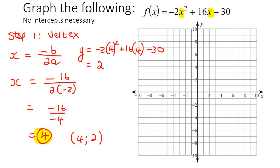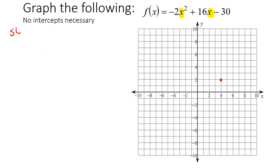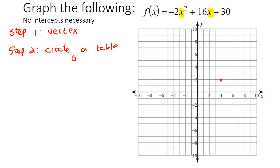So you're going to go to x is 4 and y is 2, and put a little dot there. Now we don't yet know if this graph is going to go this way or if it's going to go this way. So what we do now — I've got some nice little tricks for you. So that was step 1, where we got the vertex. Step 2, what we're going to do now is just go create a table of values.